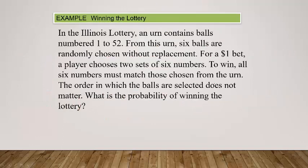In the Illinois Lottery, an urn consists of balls numbered 1 to 52. From this urn, six balls are randomly chosen without replacement. For a $1 bet, a player chooses two sets of six numbers. To win, all six numbers must match those chosen from the urn. The order in which the balls are selected does not matter, so this is a combination problem. For any lottery problem, unless it explicitly says order matters, the order of selection doesn't matter.